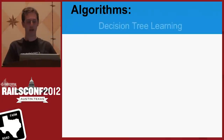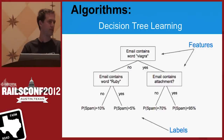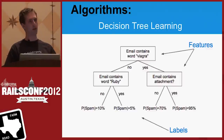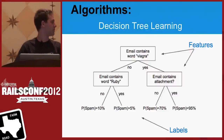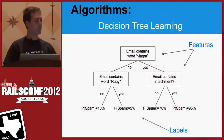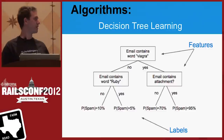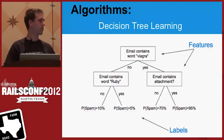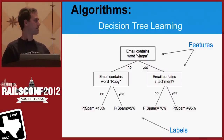I want to talk about a couple of algorithms you could use. The first is decision tree learning. What I like about decision trees is they're really straightforward — they're basically just flow charts. Here's an example decision tree that would classify a new email as spam or ham, using features like the presence or absence of the word Viagra, or the word Ruby, or how many attachments it has. The way you learn this tree is by figuring out which feature best divides your data — like playing 20 questions. You start with the feature with the highest entropy. In this case, Viagra best separated spam from ham.